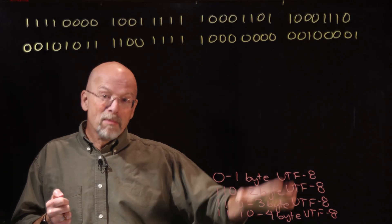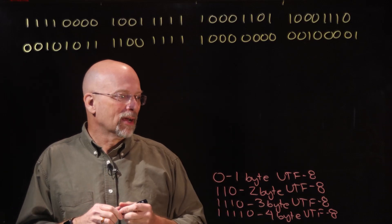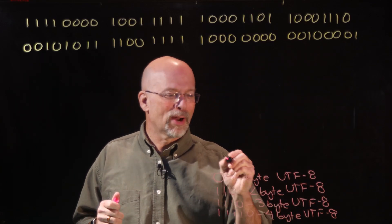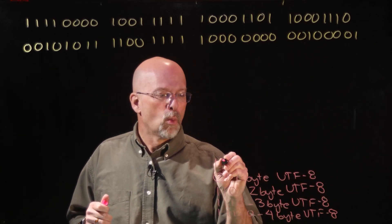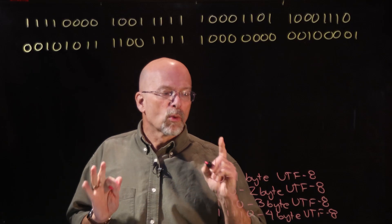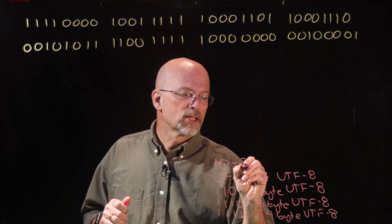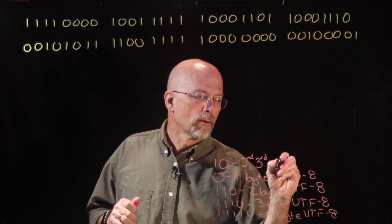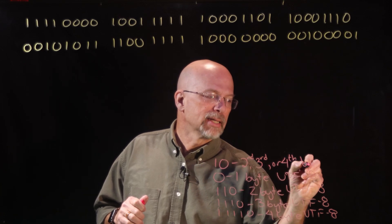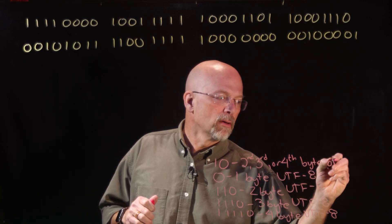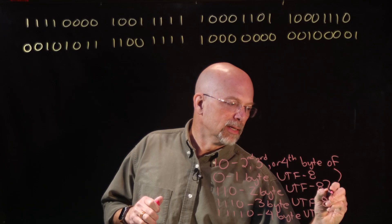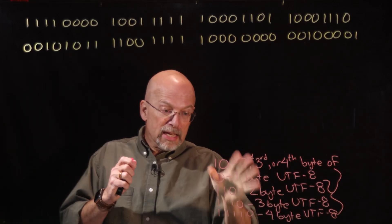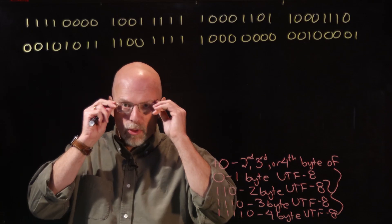There's one more pattern: one-zero is the start of the second, third, or fourth byte of a multi-byte sequence. These five patterns are the five ways you'll see a byte start in UTF-8.